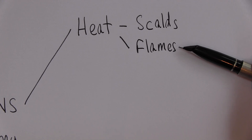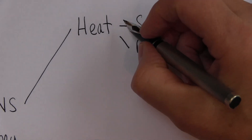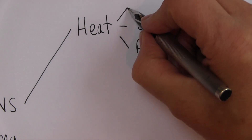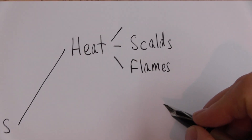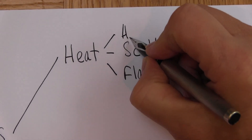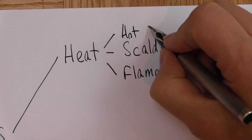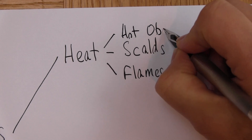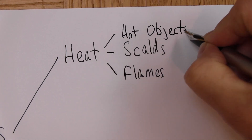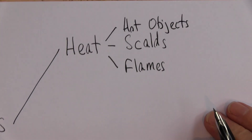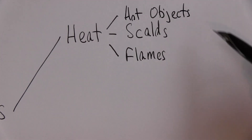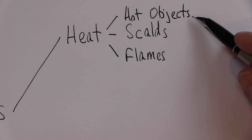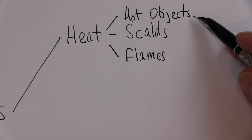Heat can also be from hot objects where the heat goes directly from a hot object via direct conduction into the tissues of the body.